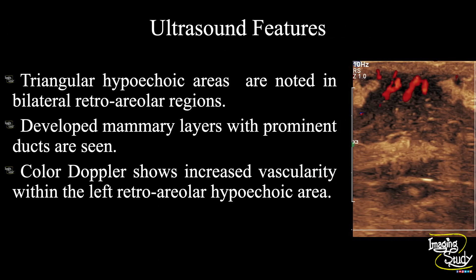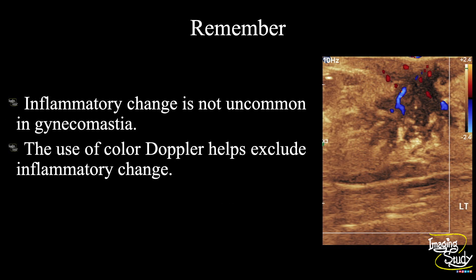In summary, triangular hypoechoic areas are noted in bilateral retroareolar regions. There are bilaterally developed mammary layers with prominent ducts. Color Doppler shows increased vascularity within the left retroareolar hypoechoic area. This features suggested a case of bilateral gynecomastia with left-sided mastitis. Take-home message: inflammatory change is not uncommon in gynecomastia, and the use of color Doppler ultrasound may help exclude inflammatory change.